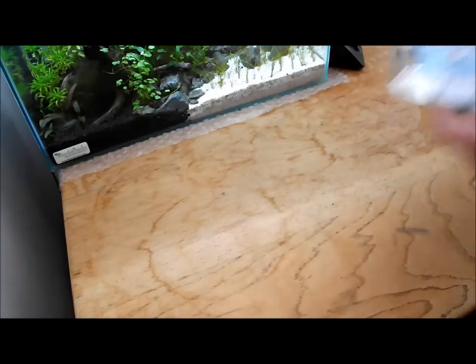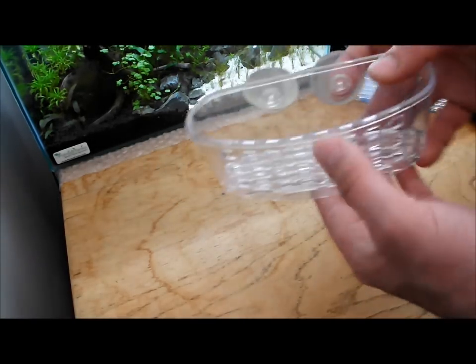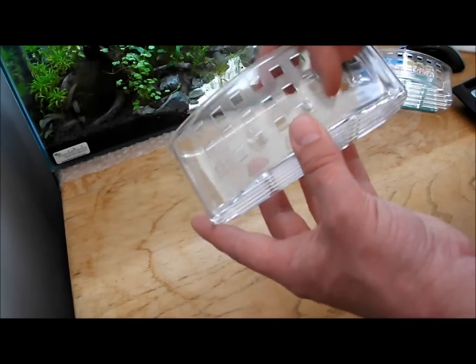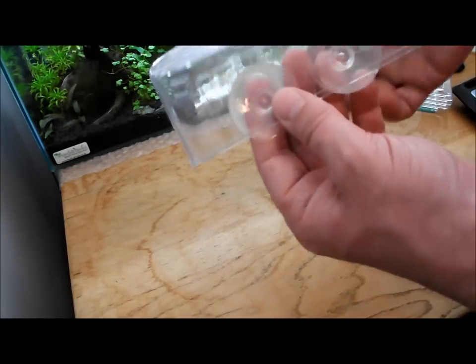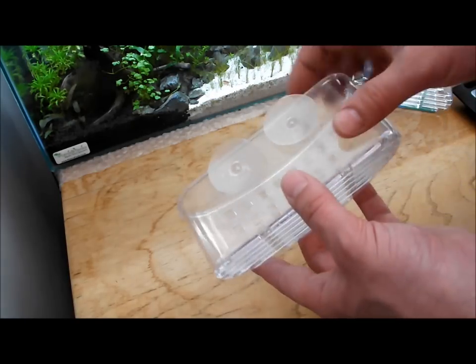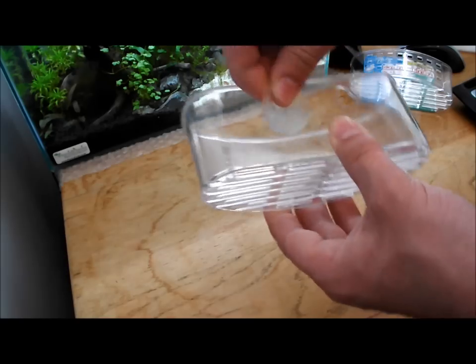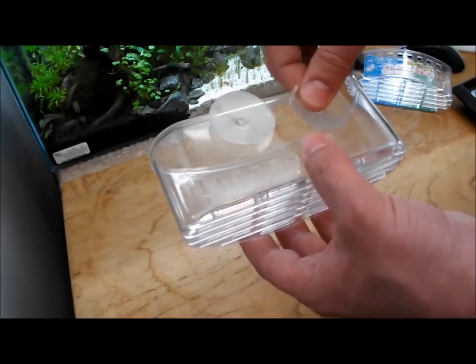I'll show you it out of the packet. You can see it's got some big holes on the front, some slot holes on the bottom, and then on the back you've got two slots there which hold suction cups. You get the suction cups with it.